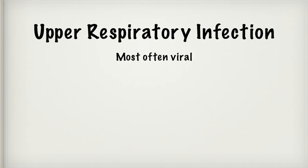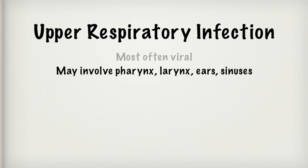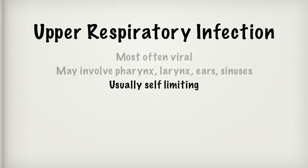Upper respiratory infections typically start as viral — the common cold and flu. Depending on what parts of the upper airway get involved, we may have it in the back of the throat — the pharynx, the larynx, down in the vocal cords. It may involve the ears or the sinuses. Typically these things just go away with time — they're self-limiting. Just give a few days, rest and fluids.